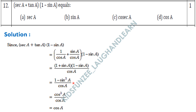Simplifying, it gives us (1 + sin A)(1 - sin A) / cos A. Using the identity a² - b²: 1² - sin²A = cos²A (since cos²A + sin²A = 1, so 1 - sin²A = cos²A). So we get cos²A / cos A = cos A. The value is cos A, which is option D.